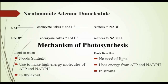Before proceeding to the mechanism of photosynthesis, students, you must know about two main high-energy molecules of this procedure. One is ATP and the second is NAD, which stands for nicotinamide adenine dinucleotide. It is a coenzyme that takes electrons and hydrogen ions and is reduced to NADH. One form of this coenzyme also carries phosphate, called NADP, and it also takes electrons and hydrogen to reduce to NADPH.